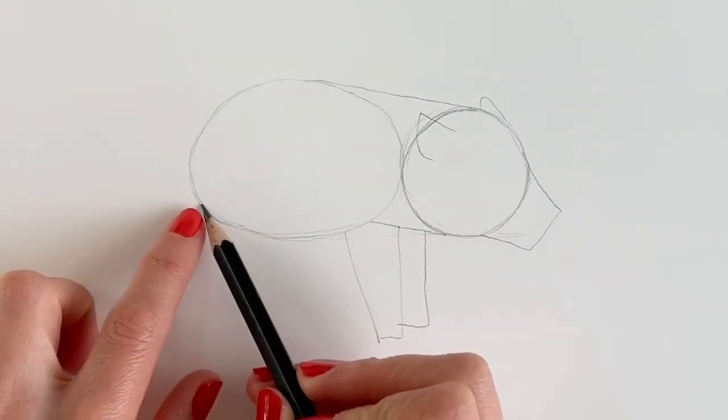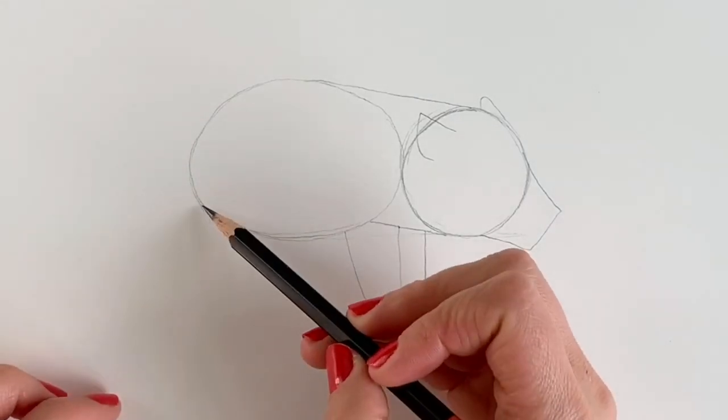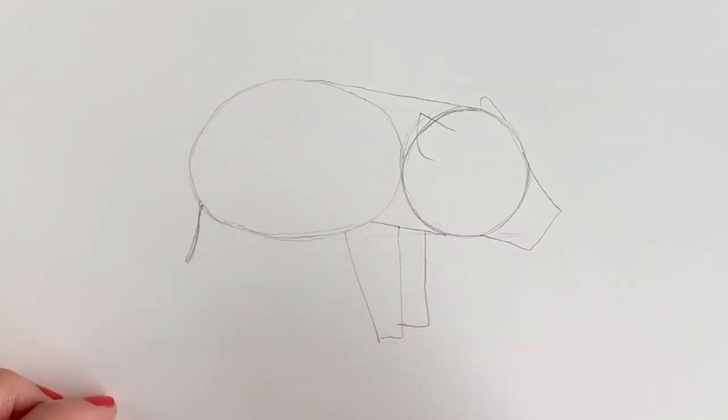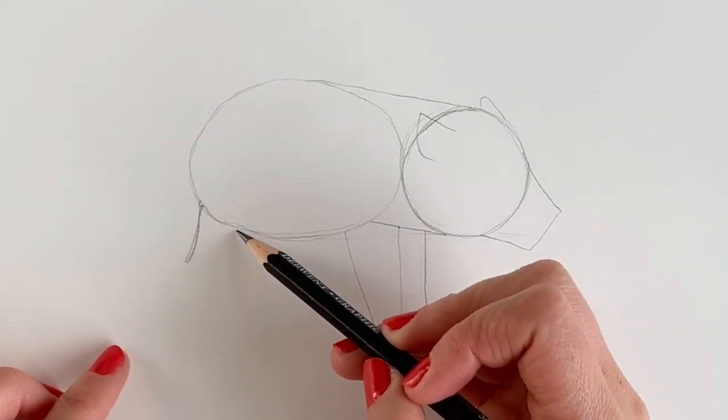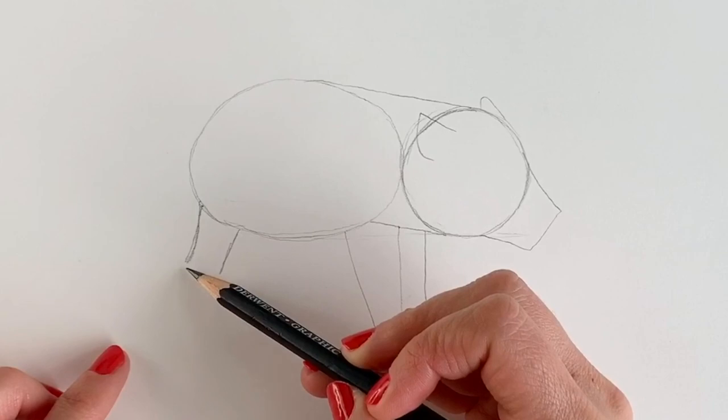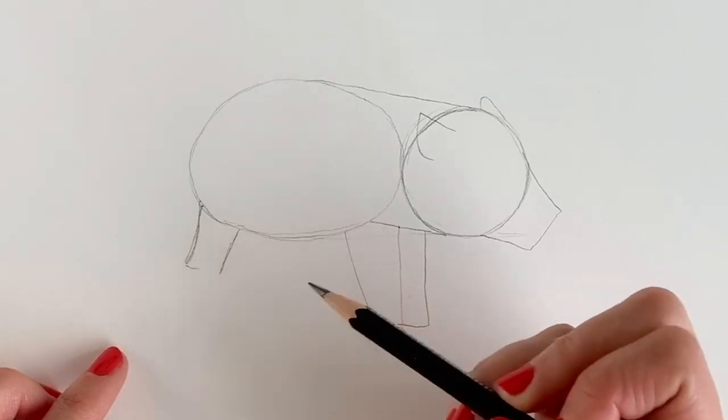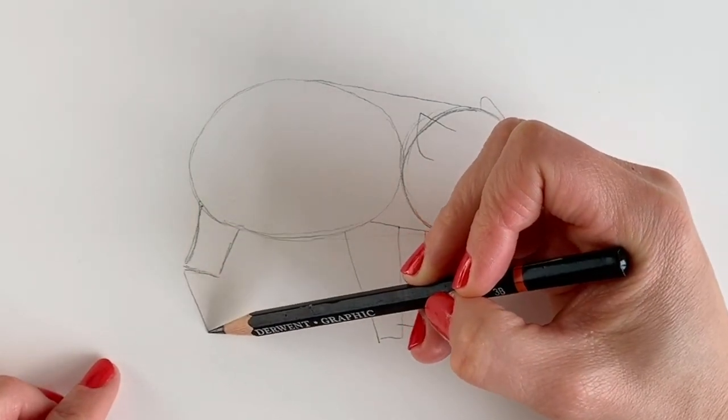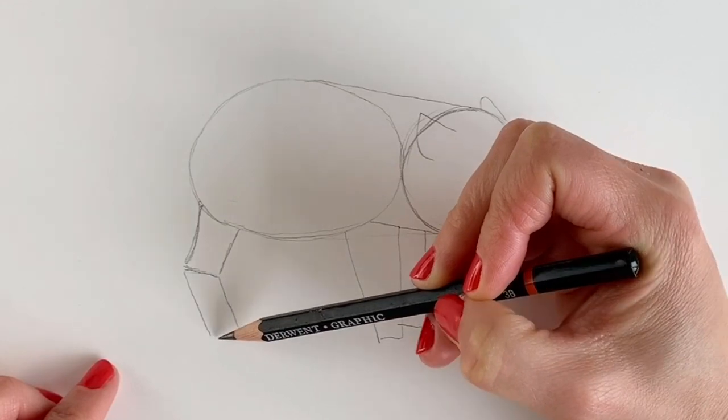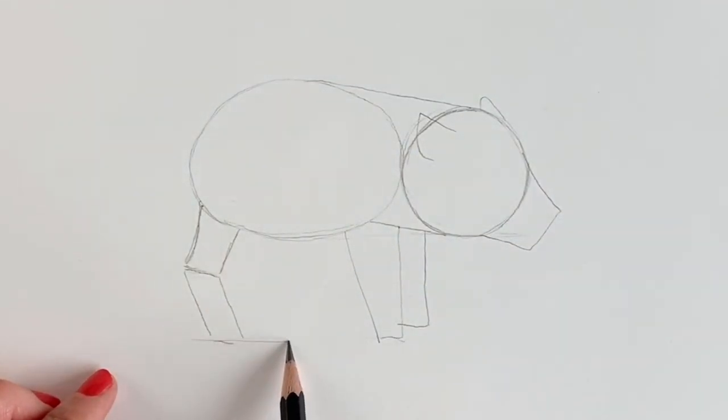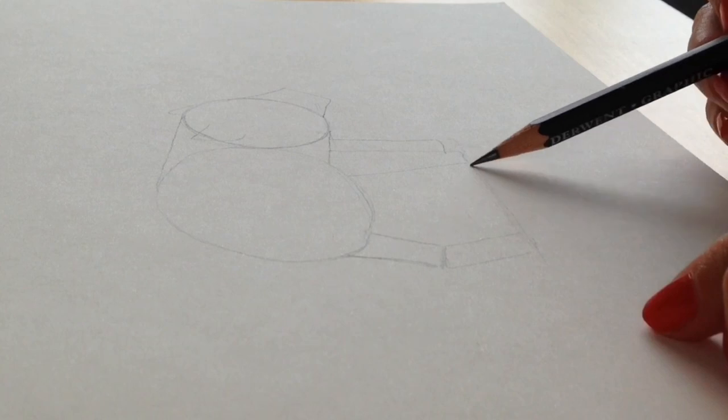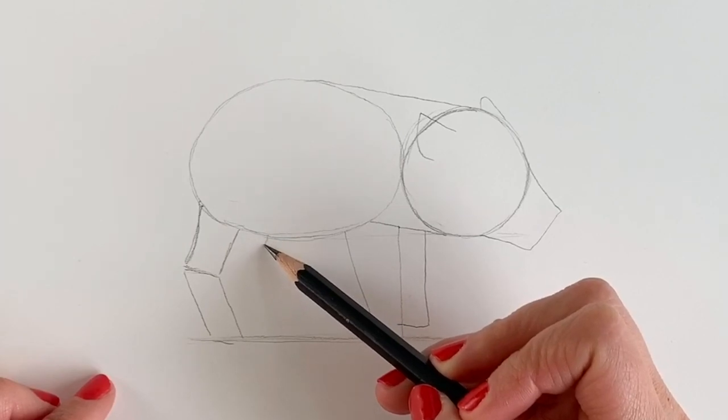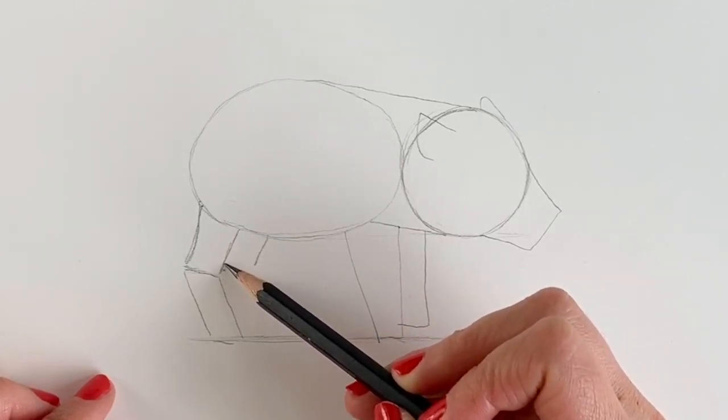We're now going to do the hind leg. Coming out from this oval shape, we're going to draw a very slightly curved line. See what I mean? We're also going to draw a diagonal line coming out from here. I'm going to join up these two lines, just like so, and then we're going to draw the lower part of the leg coming down. I'm going to make sure that these two are kind of in line with each other, so I'm just going to draw a line horizontally across there.